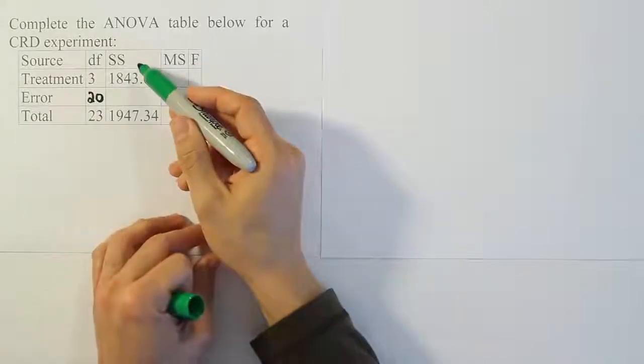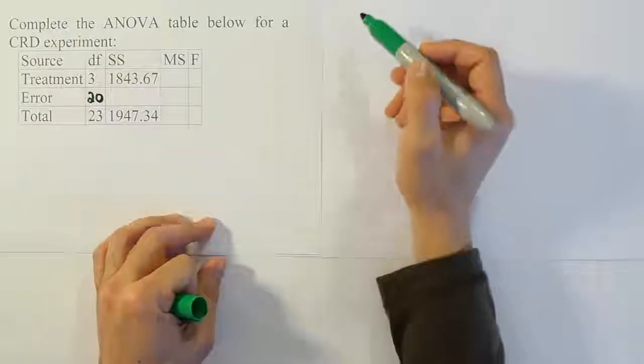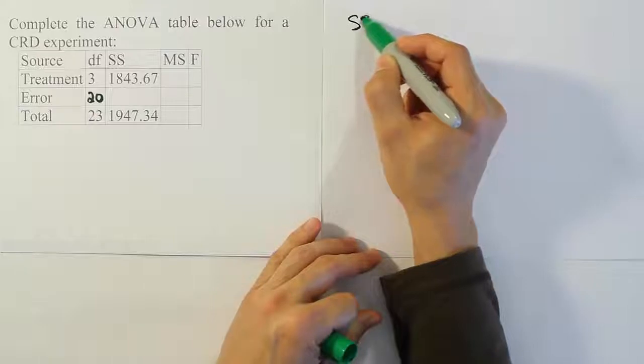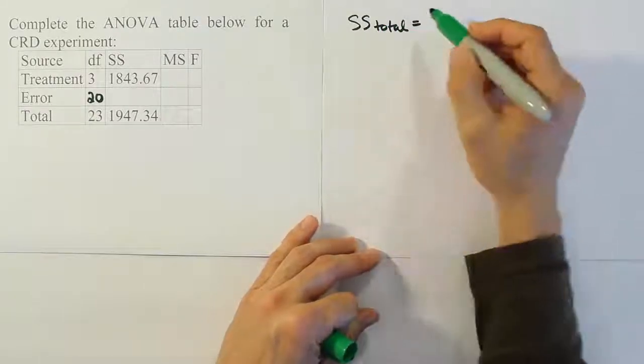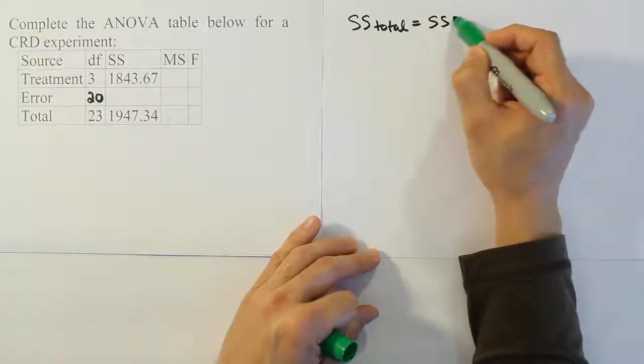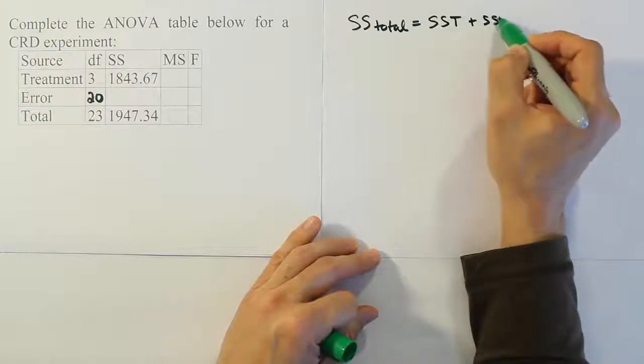From there we want to get the sum of square for error, and we have this relationship: we have the sum of square total is equal to the sum of square for treatment plus the sum of square for error.